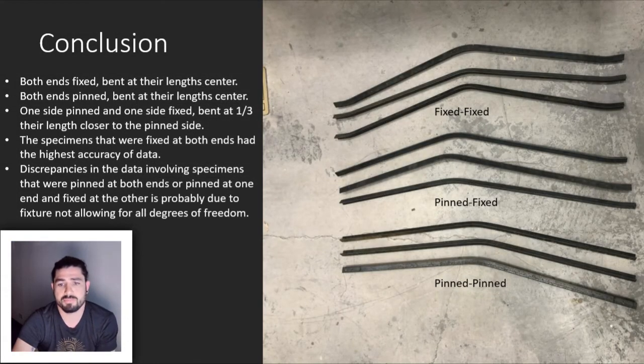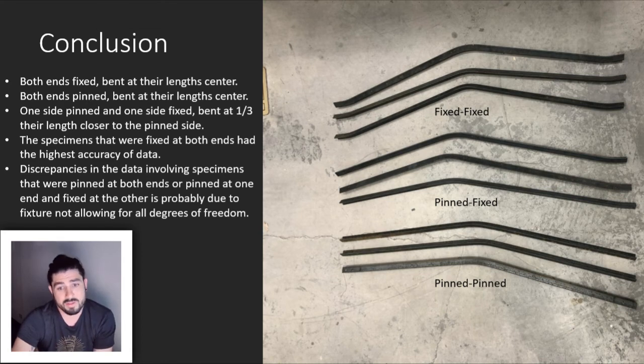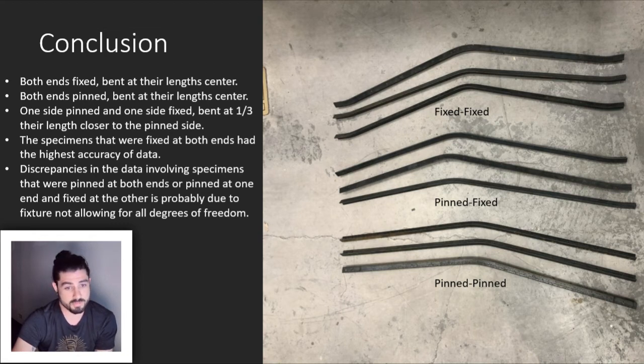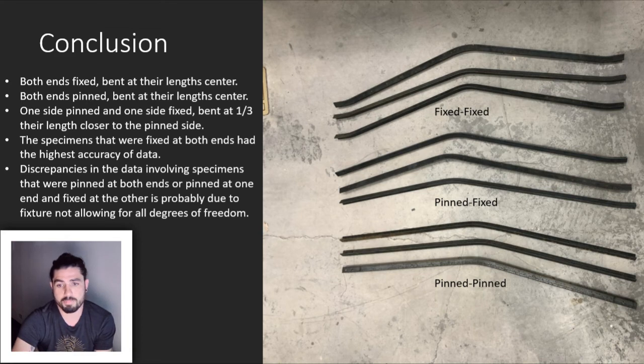The difference in the force pounds between what was theoretically calculated compared to what was calculated from the experimental data was 23% for specimens fixed at both ends, 75% for the fixed to pinned specimens, and 87% for the both ends pinned specimens.